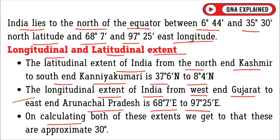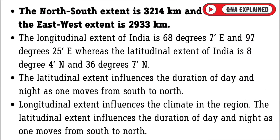On calculating both of these extents, we find that these are approximately 30 degrees each. The north-south extent is 3,214 kilometers and the east-west extent is 2,933 kilometers.